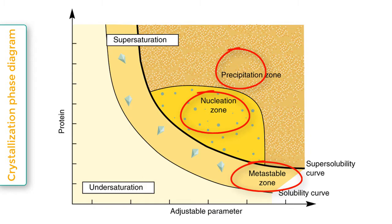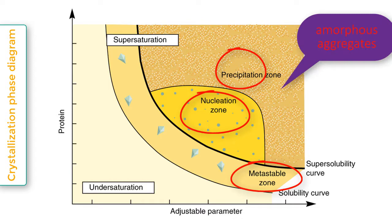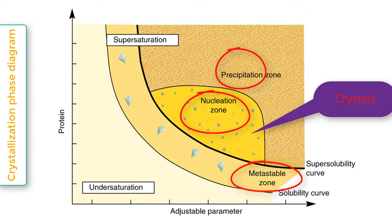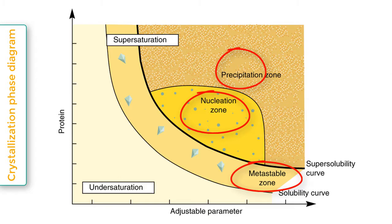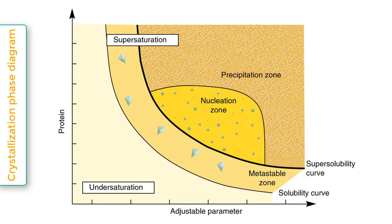There are three mechanisms by which supersaturation occurs: precipitation, nucleation, and metastable. In the precipitation zone, molecules in a solution are in excess and will separate from the solution to form amorphous aggregates. The excess molecules aggregate to form a crystalline structure when in the nucleation zone. In the metastable zone, the solution takes time to nucleate in order to grow crystals. The conditions in the metastable zone require the formation of one nucleus, while in the nucleation zone just past the metastable region, the supersaturated solution can then return to the metastable region.